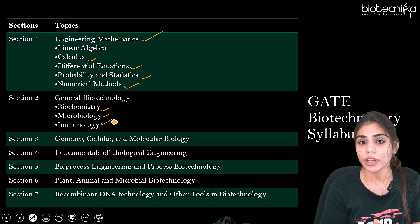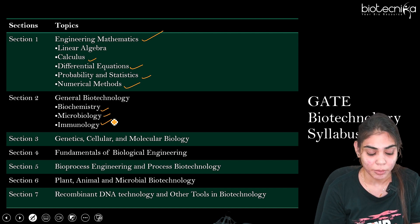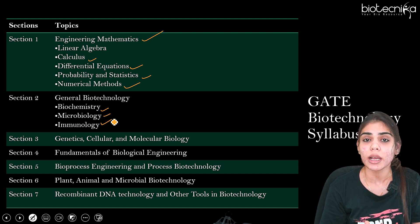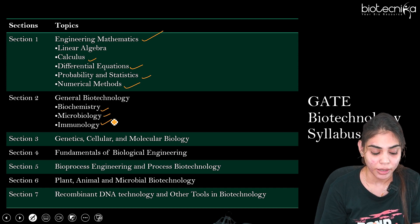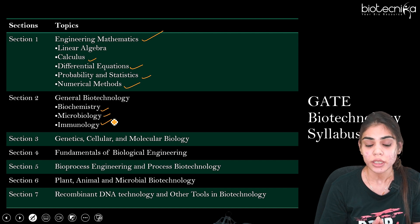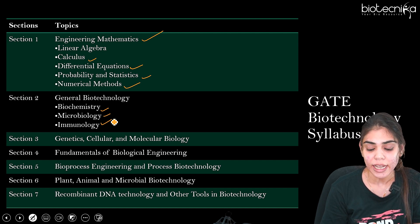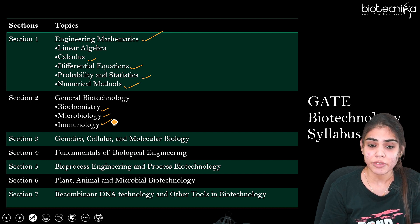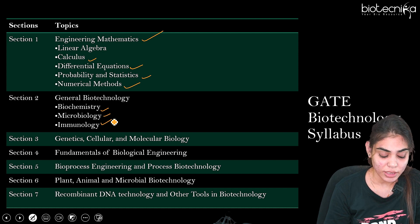Section 3 deals with Genetics, which also includes evolutionary biology and Cellular, where you have to learn about cell biology as well as molecular biology. Section 4 deals with the Fundamentals of Biological Engineering, covering thermodynamics as well as the metabolism part. Section 5 is a totally new section that covers bioprocess engineering as well as process biotechnology. Section 6 deals with plant, animal, and microbial biotechnology specifically.